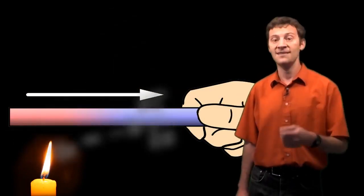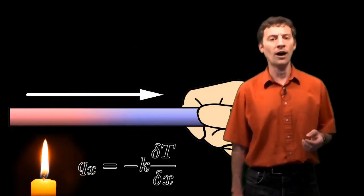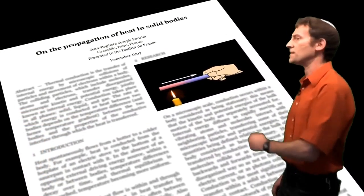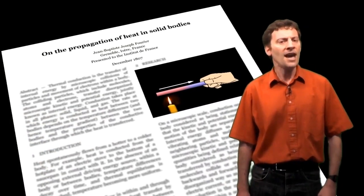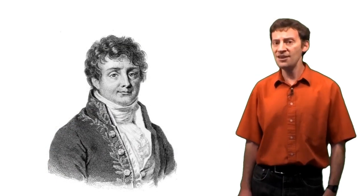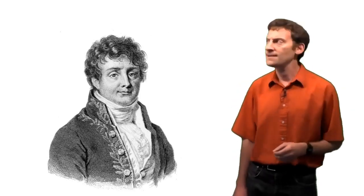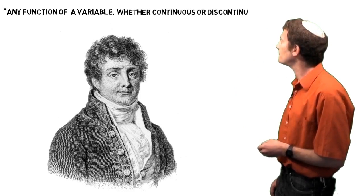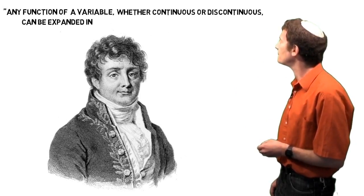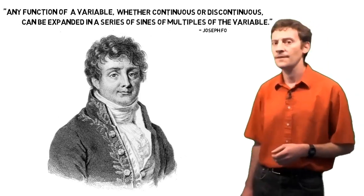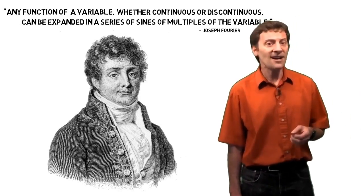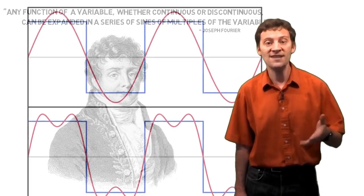He applied mathematical techniques to the theory and wrote a memoir entitled On the Propagation of Heat in Solid Bodies. It was while he was working on this theory that he proposed the idea that any function of a variable, whether continuous or discontinuous, can be expanded in a series of sines of multiples of the variable. This is the idea which became known as the Fourier series.